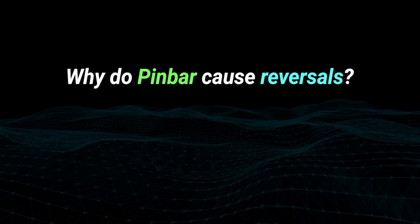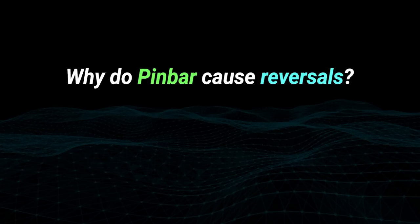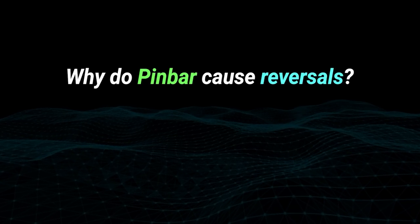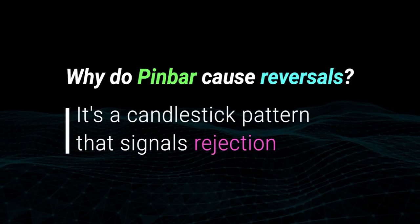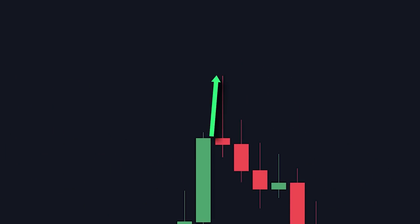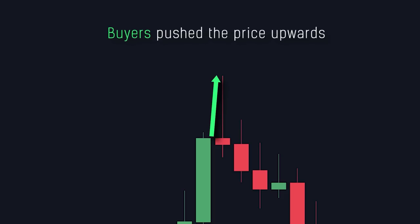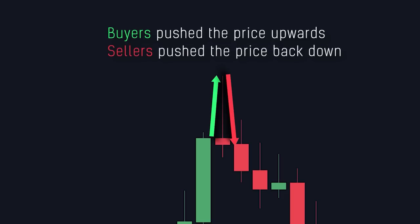Now the question is, why does the appearance of a pin bar mean that a price reversal will happen? The logic behind it is that it is simply a candlestick pattern that signals rejection. In this example, we spotted strong upwards momentum as buyers pushed the price all the way up towards the highest point of this candle. But then, before the candle managed to close, sellers started coming in and pushed the price back down, rejecting that previous upwards momentum. That rejection by the sellers caused this candle to have a small body and a long wick that sticks out — which, as we know, is called a pin bar.